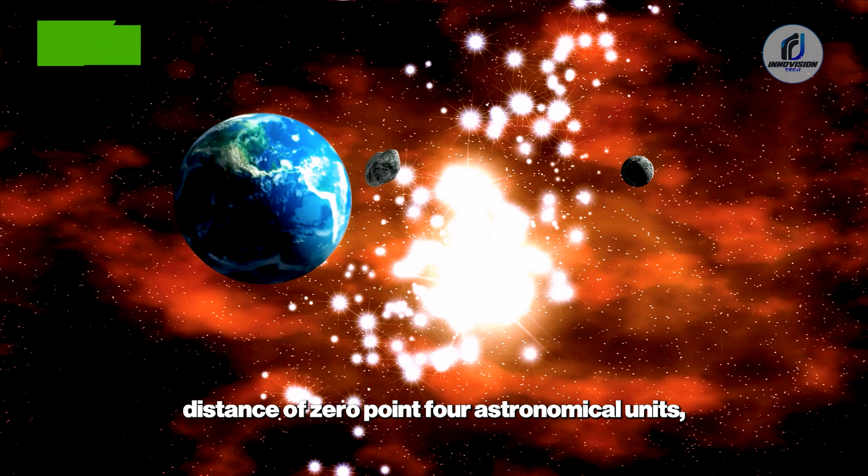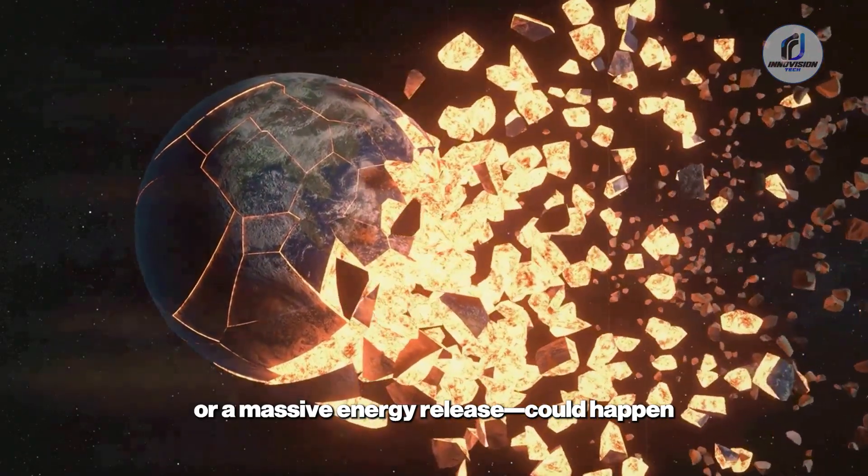Perihelion Blindness: Here's where the timing gets critical. The comet is scheduled to reach perihelion, its closest approach to the sun at a distance of 0.4 astronomical units, on October 29. At that exact moment, it will be hidden from our view, positioned directly behind the sun in a solar conjunction. This creates a week-long observational blackout for all ground-based telescopes on Earth. Any sudden change in behavior, a fragmentation, a course correction, or a massive energy release could happen completely undetected.